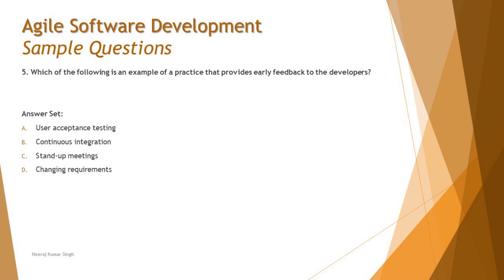Moving on to Question 5: Which of the following is an example of a practice that provides early feedback to developers? We've discussed how to get early and frequent feedback — it's by continuously integrating code into the existing codebase. At any point, your day-to-day work must be built on a sustainable environment so that new pieces of work don't break existing functionality. This is one of the key agile principles of sustainable development.